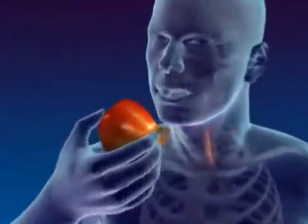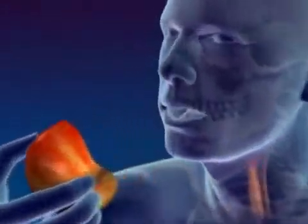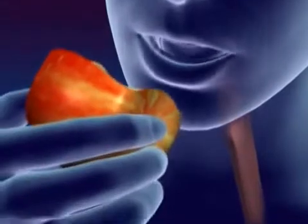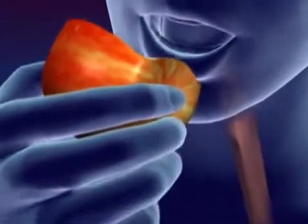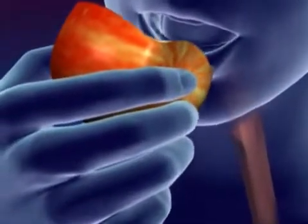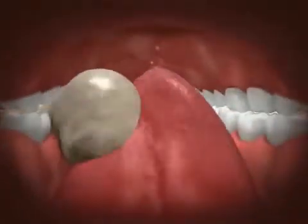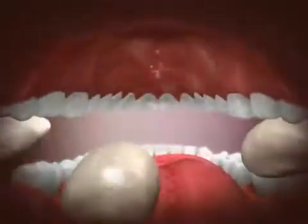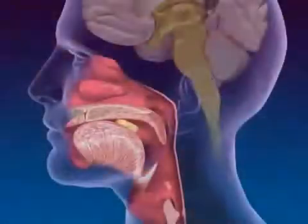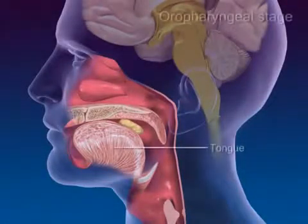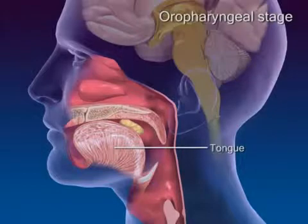Swallowing occurs in two stages: the oropharyngeal and esophageal stages. At the start of a swallow, a food bolus is voluntarily pressed by the tongue up against the roof of the mouth and backwards towards the pharynx.